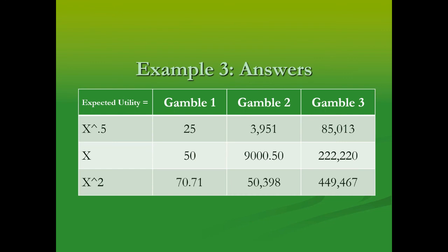Here is the rest of the chart filled in. You can go through and test yourself on gambles two and three to find the certainty equivalents. Certainty equivalents are very useful for thinking about the behavior of individuals, in particular their behavior when confronted with risk. Remember, certainty equivalents answer: what certain level of income gives me the same level of utility as the utility from a particular gamble?